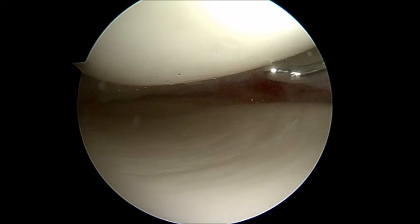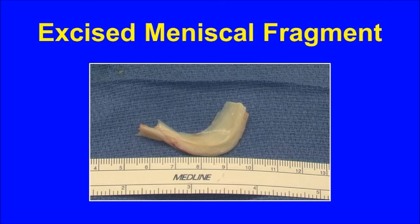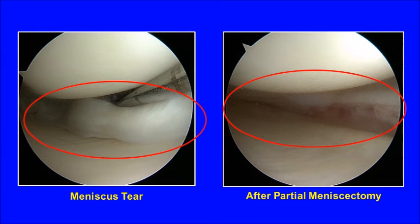Here is a still photograph showing the fragment of meniscus that was excised from this patient's knee. This image shows the area of the meniscus tear on the left and the same area after the bucket-handle fragment has been removed on the right.